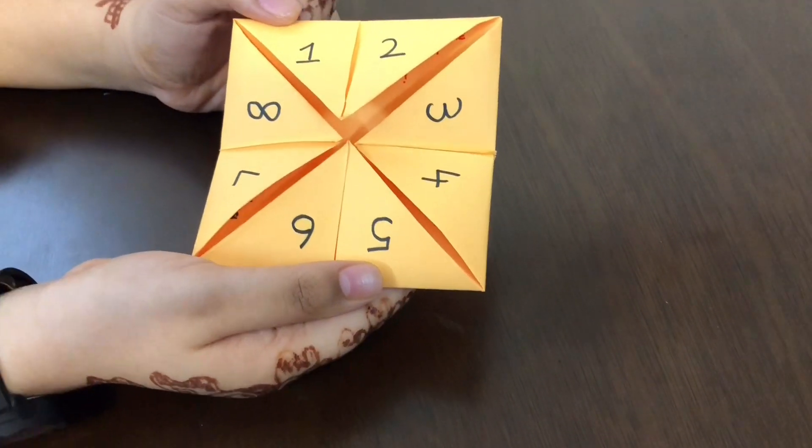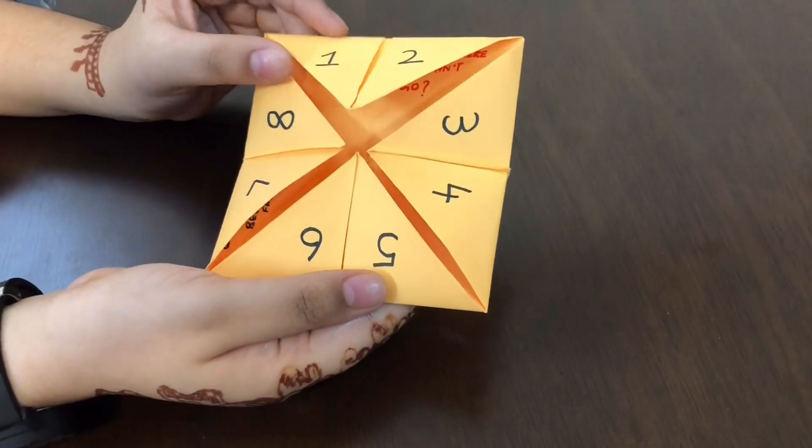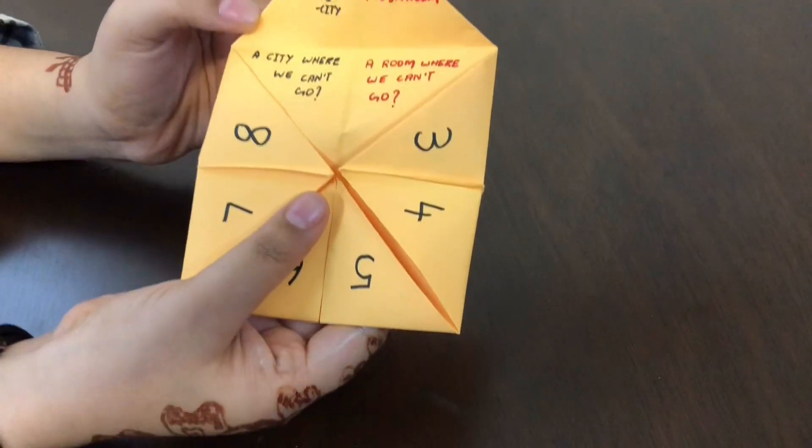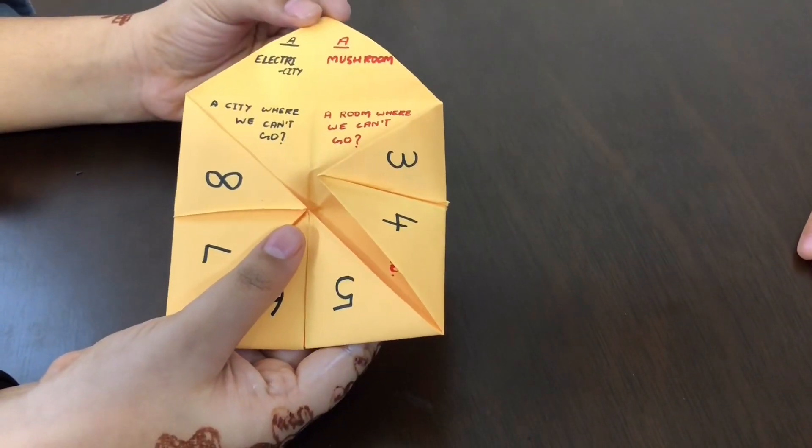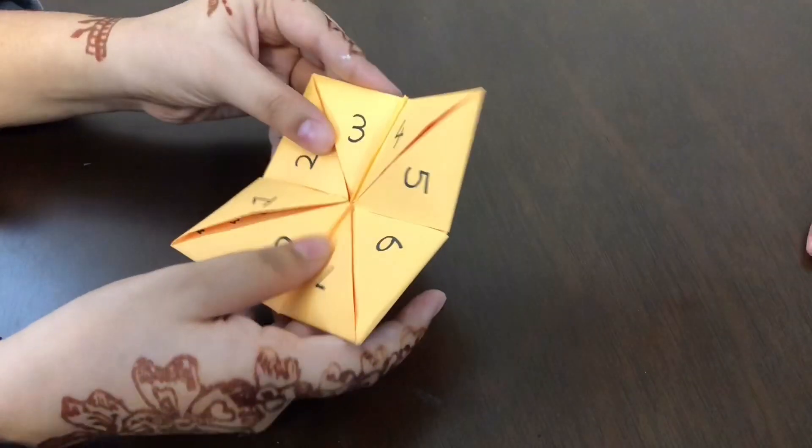In number one, I have written 'a city where we can't go.' And on the top, I have written the answer: electricity. Then number two, I have written 'a room where we can't go,' and that's mushroom.